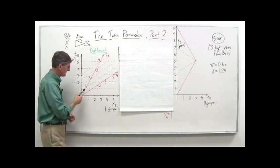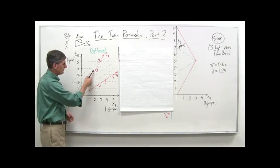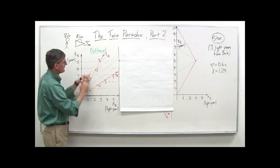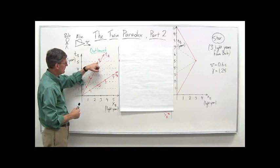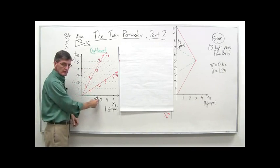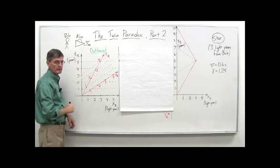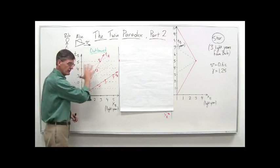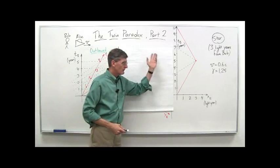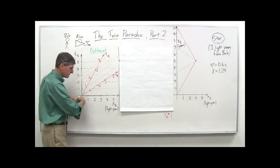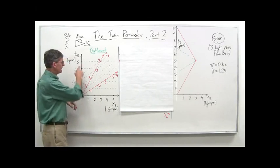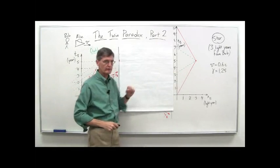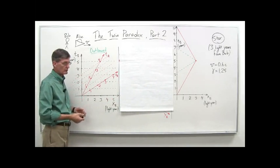We can see Bob's got the 90-degree angles. Alice, for a velocity of 0.6c, we've drawn the appropriate angle for each of the axes. This is the x-sub-a axis, this is the t-sub-a axis. This really is the world line for Alice — she's moving along the t-sub-a axis. We can see that as she moves along, when she gets to four years on her clocks, she's at the star, three light years away. On Bob's clocks, that reads five years. Velocity is 0.6c, so Bob sees Alice go three light years and it takes five years. Alice, from the time dilation effect with gamma equals 1.25, takes four years as Bob observes her clocks.